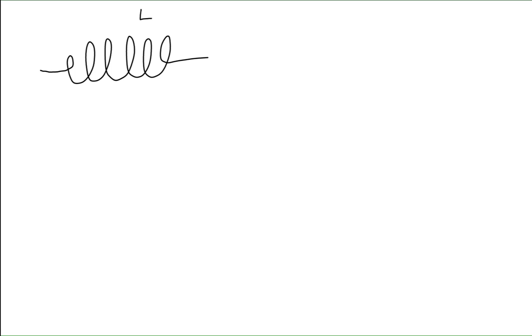Let's begin by sketching an inductor. Here's an inductor represented by a solenoid. This inductor has an inductance L and there is a current running through it from left to right. At the top of the solenoid the current is coming towards us, indicated by the dots, and at the bottom of the solenoid the current is going away from us, indicated by the x's. That current generates a uniform magnetic field within the solenoid, and notice that the magnetic field occupies a volume within that solenoid, which means that there is going to be a potential energy density within that volume due to the magnetic field.